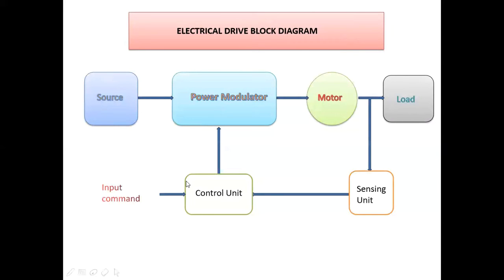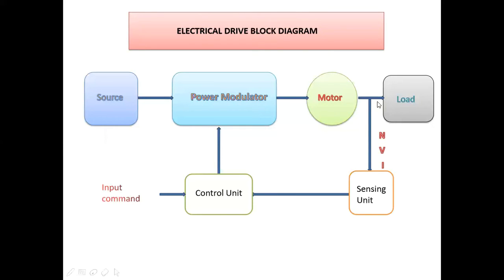Now we discuss the control circuit. The control circuit consists of two blocks — the sensing unit and the control unit. The sensing unit is connected between the motor and the load. The output parameters of the motor — voltage, current, and speed — are sensed by the sensing unit. These parameters are fed to the control unit. The input command to the control unit is the set speed, set voltage, and set current values, which serve as reference values for feedback control.